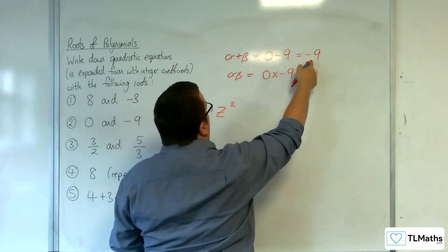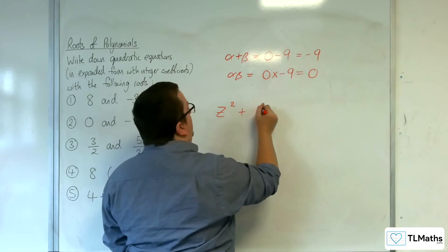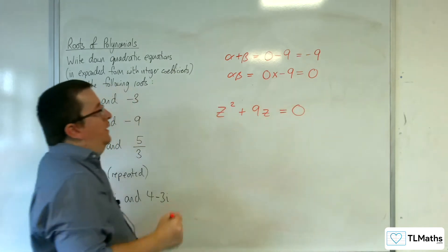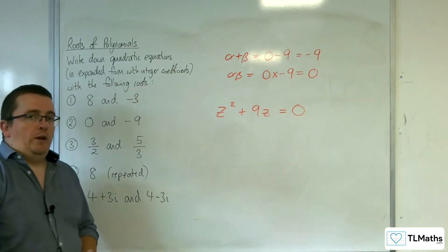take away the sum of the roots times z, so plus 9z, plus alpha beta equals 0. And so that is the quadratic equation I need.